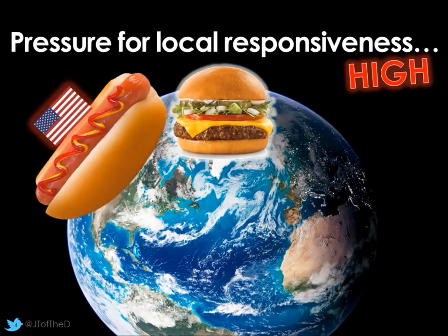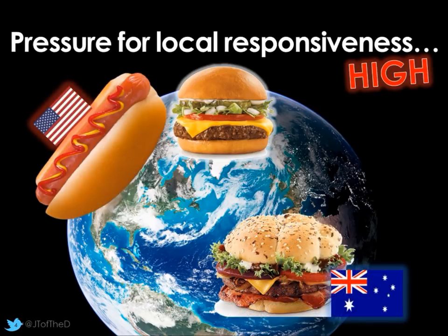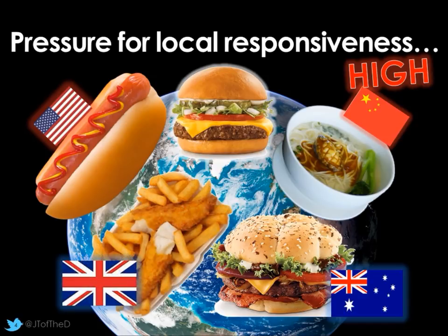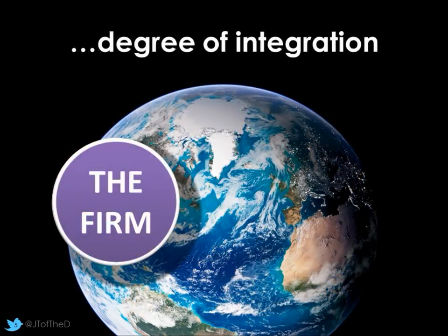So a burger company could decide to sell hot dogs in the States, kangaroo burgers in Australia, noodles in China, and perhaps even fish and chips in the UK — highly focused on the needs of the local market. The second factor they considered was the degree of integration that a firm would have as it grew internationally. This is often thought about as being a cost saving or economies of scale measure, to try and make some savings and operate more as one united company rather than something more decentralised.